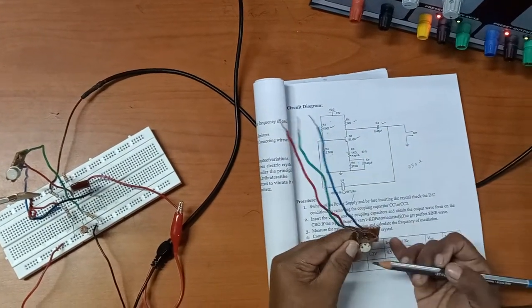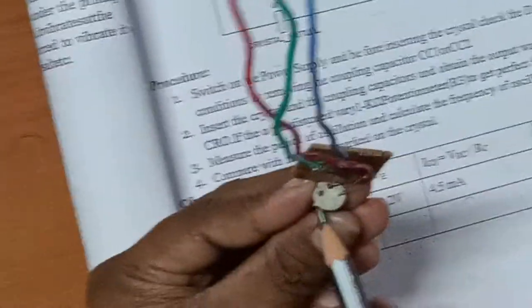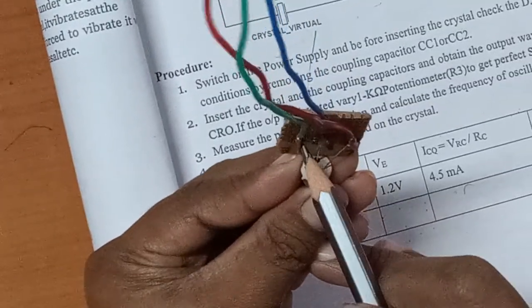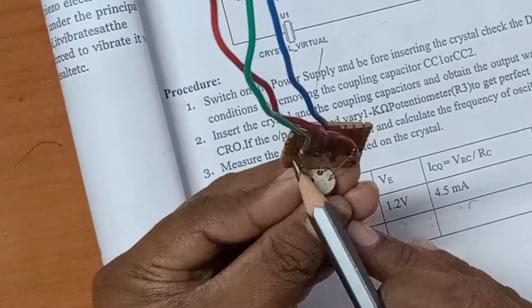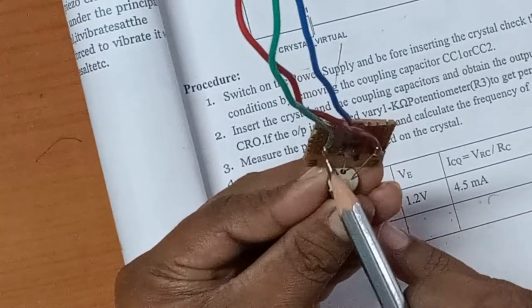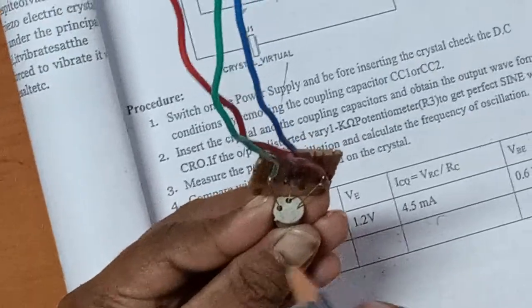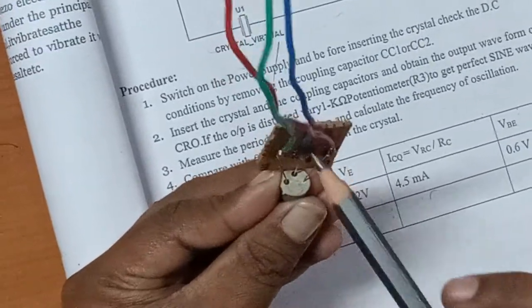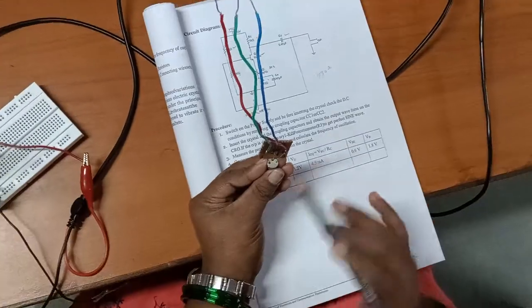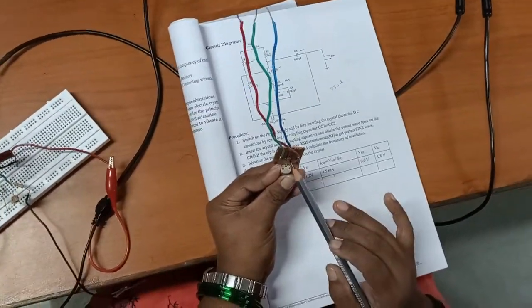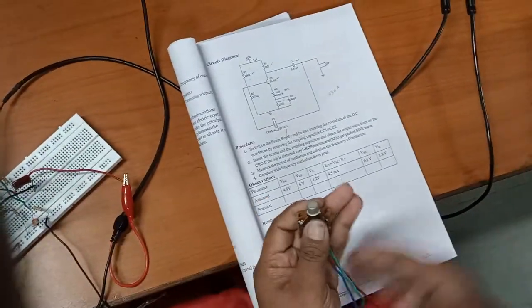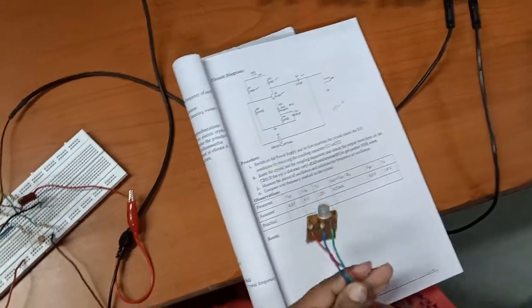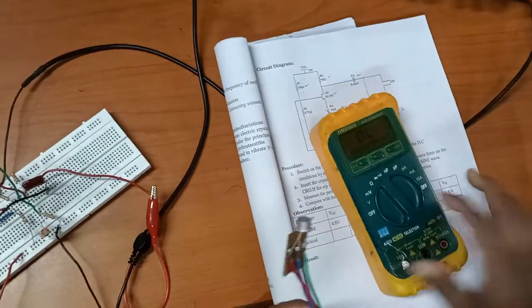The transistor has one notch. From the notch clockwise: emitter, middle is base, and third is collector. This is an NPN transistor, so NP is one junction and PN is another junction. I'll show how to check if the transistor is working or not.